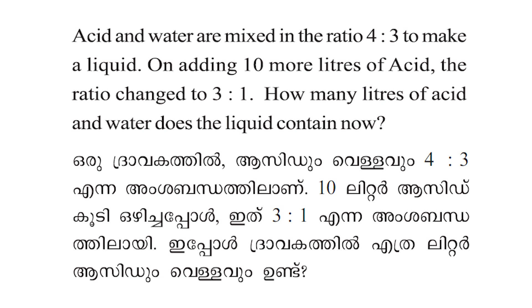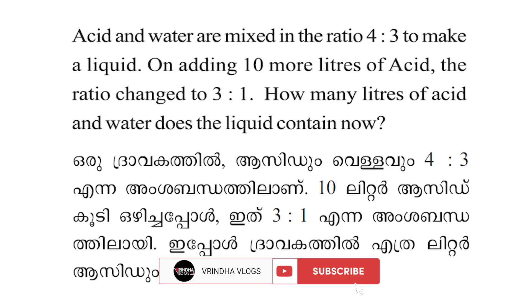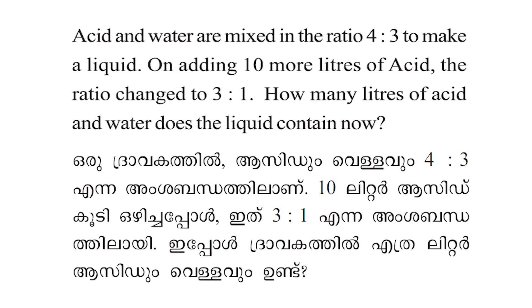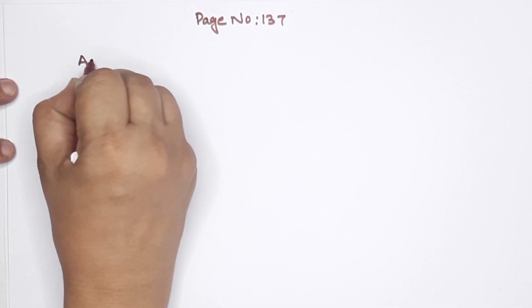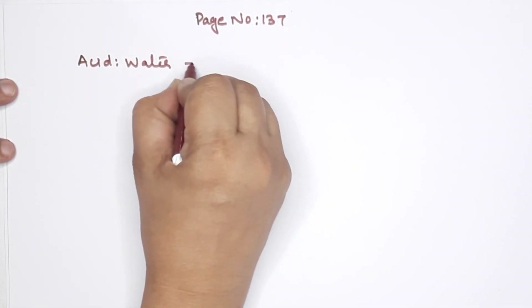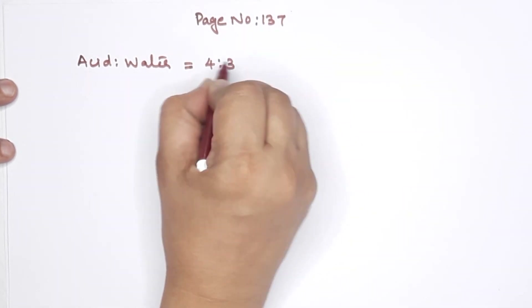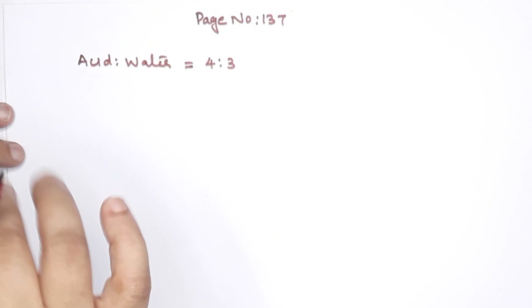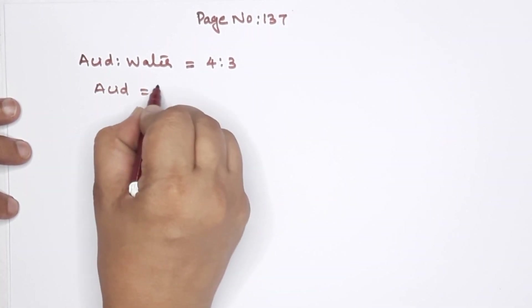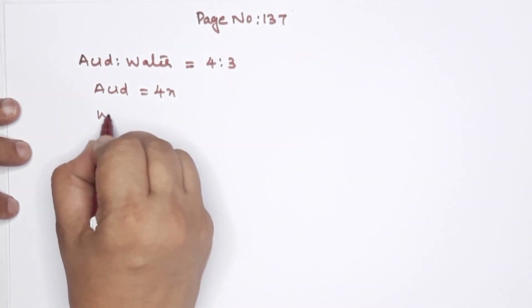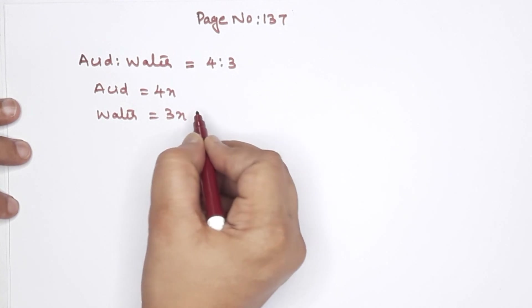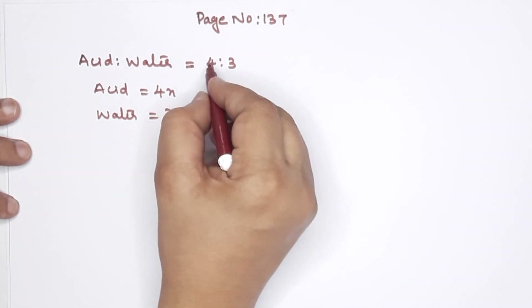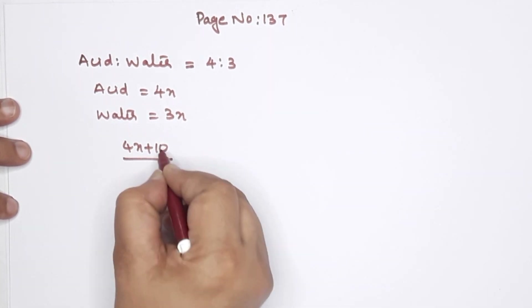Acid and water are mixed in the ratio 4 is to 3 to make a liquid. On adding 10 more liters of acid, the ratio changed to 3 is to 1. How many liters of acid and water does the liquid contain now? We need to represent acid and water. The ratio is 4 is to 3, so we call acid 4x — that is the original value — and water is 3x.